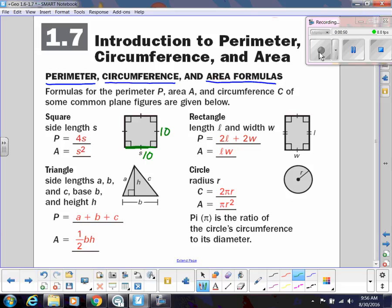And then rectangle, remember rectangles, they don't have all the same sides, so we have a length and a width. So our perimeter would be 2 of those lengths and 2 of the widths added together. And then our area is length times width.